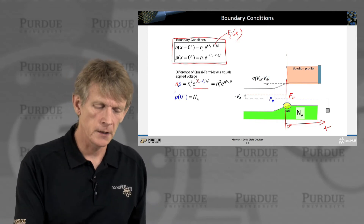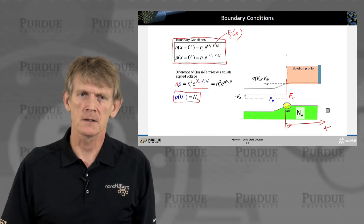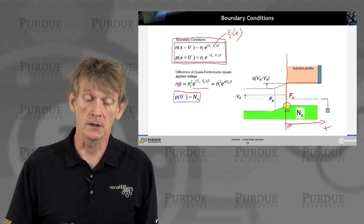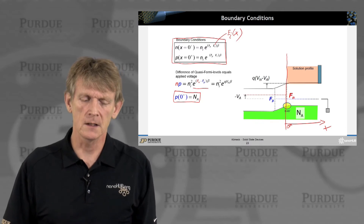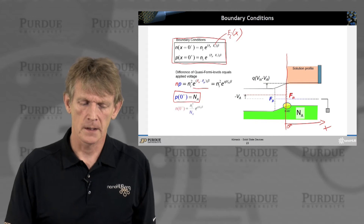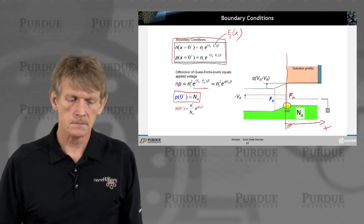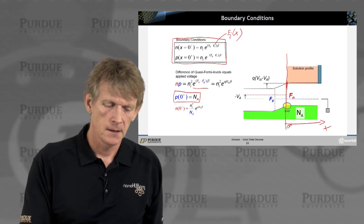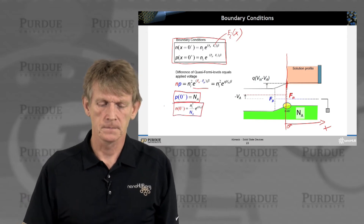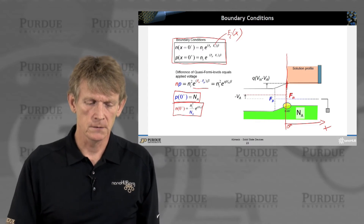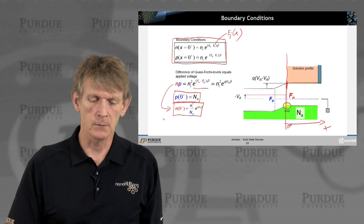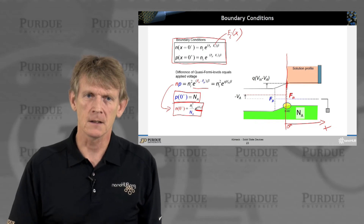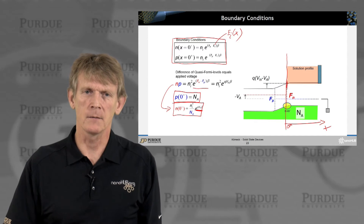At that position, we assume that the majority carrier concentration — the holes — is given by the acceptors. So the hole density is completely determined by the acceptor doping. Given that, in equilibrium at this position we can calculate an electron density. This electron density includes the applied voltage, so this is not the equilibrium density anymore — this is the minority carrier density induced by the applied voltage.